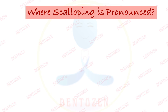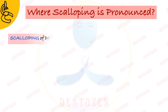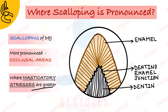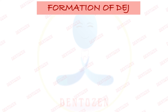Next, where is this junction most pronounced — where are these curves very prominent? The scalloping of the dentino-enamel junction is most pronounced in areas where masticatory stresses are greatest, which is in the occlusal areas of the tooth. In the cuspal region, these curves will be very pronounced. You can draw this pronounced dentino-enamel junction in the diagram of the cuspal region.